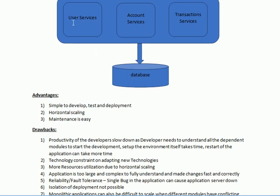Isolation of deployment is also not possible. If you are working on a feature in user services and want to deploy that particular piece of code, in a monolithic application you have to bring the complete server down first and then only you can deploy your changes.